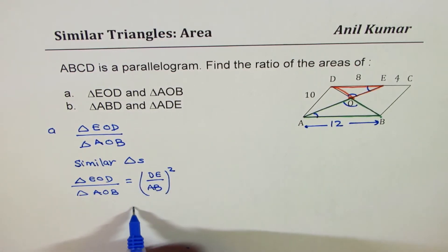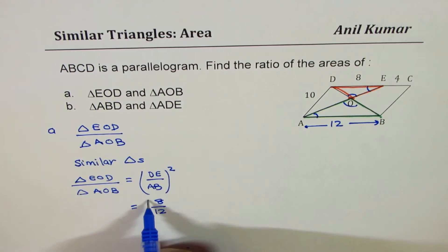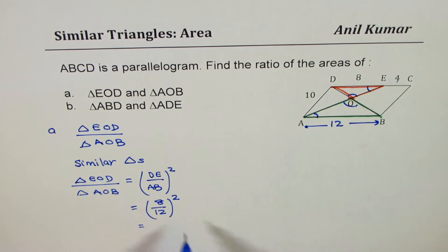And so we can write this ratio as 8 over 12 whole square, now this can be simplified, dividing both by 4, we get 2 over 3 whole square or it gives you 4 over 9.